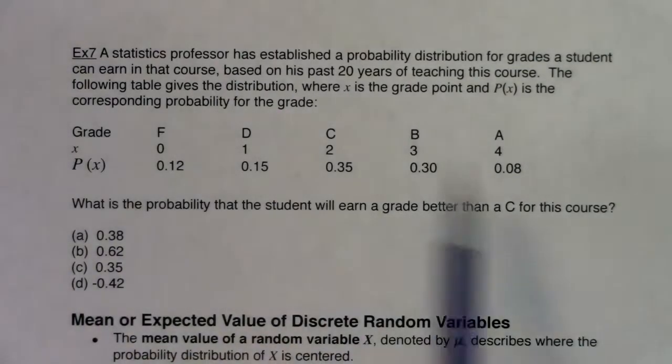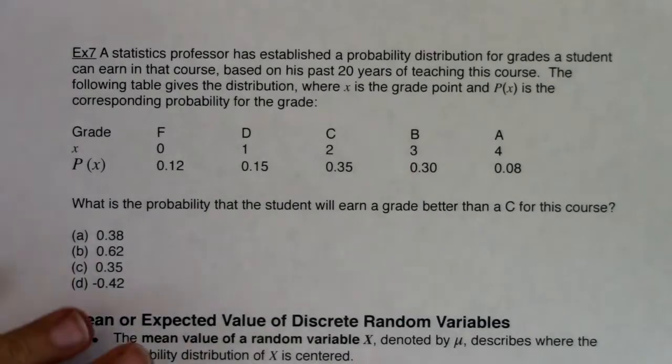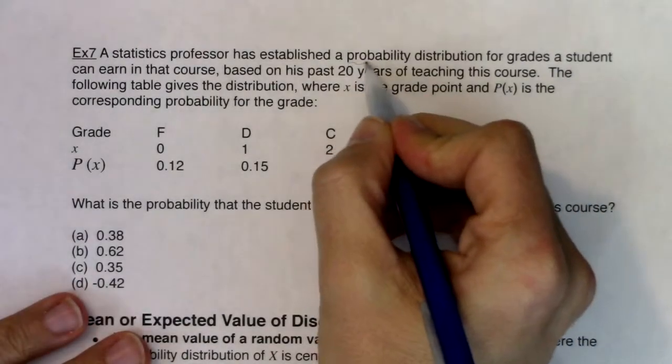We see this table and it says what is the probability that a student will earn a grade better than a C for this course? So some words that popped out to me, I saw probability distribution.